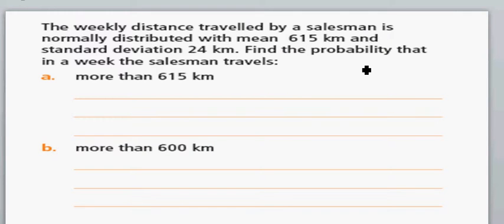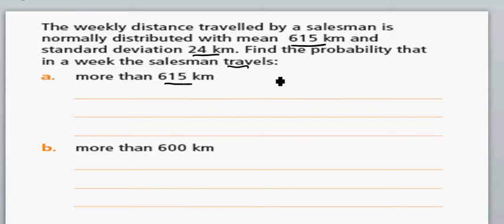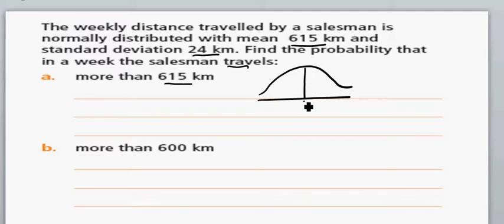The weekly distance traveled by a salesman is normally distributed with a mean of 615 kilometers and a standard deviation of 24 kilometers. Drawing a normal distribution curve: mu is 615 and standard deviation is 24 kilometers.